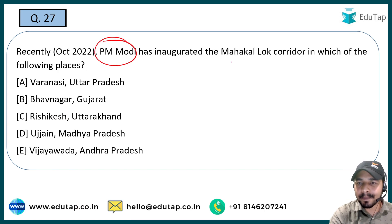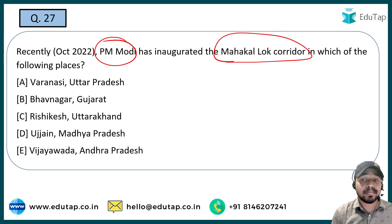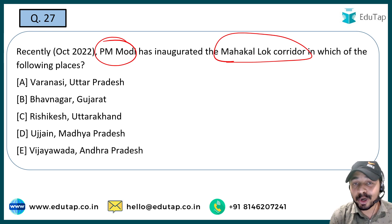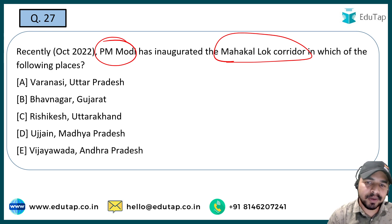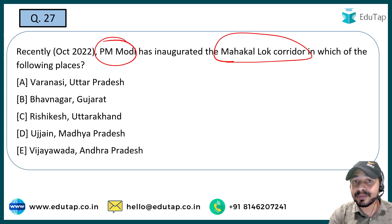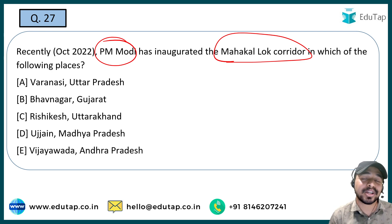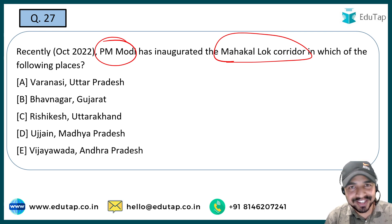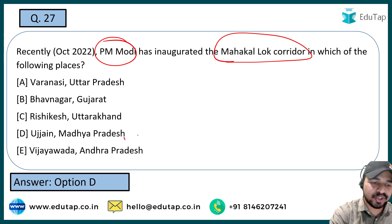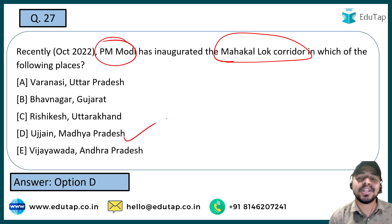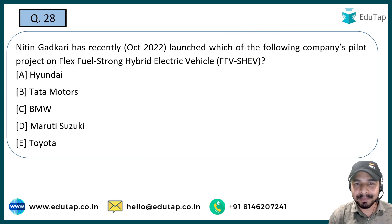The next question: PM Modi inaugurated the Mahakal Lok Corridor. Whenever Prime Minister Modi launches or inaugurates something, it becomes very important from the exam point of view. The right answer is Ujjain in Madhya Pradesh, where the Mahakal Lok Corridor has been recently inaugurated by Prime Minister Modi.